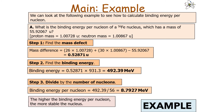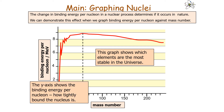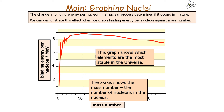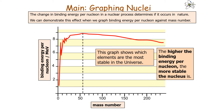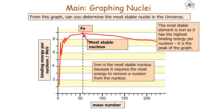Remember: the higher the binding energy per nucleon, the more stable the nucleus is. The change in binding energy per nucleon in a nuclear process determines if it occurs in nature. We can demonstrate this by graphing binding energy per nucleon against mass number, which shows which elements are the most stable in the universe. On this graph, the y-axis shows binding energy per nucleon and the x-axis shows mass number. Iron sits at the peak of the graph with the highest binding energy per nucleon, making it the most stable nucleus — it requires the most energy to remove a nucleon.